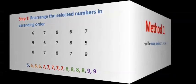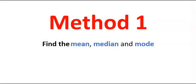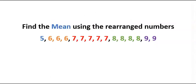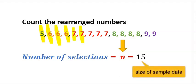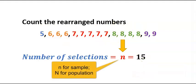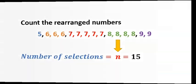Now let's apply Method 1 to find the mean, median, and mode. Let's start with the mean. Next step, count the rearranged numbers. You can see if you count these numbers: 1, 2, 3, 4, 5, 6, 7, 8, 9, 10, 11, 12, 13, 14, 15. And n is usually used to denote the number of selections.